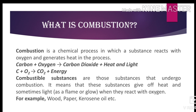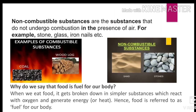Combustible substances are those which burn easily in air to produce heat and light. For example, wood, paper, kerosene oil, etc. Non-combustible substances are those that do not undergo combustion in the presence of air — they do not burn. For example, stone, glass, iron nails, etc. In the picture, examples are shown: combustible substances such as coal and wood, and non-combustible substances such as sand and stones.